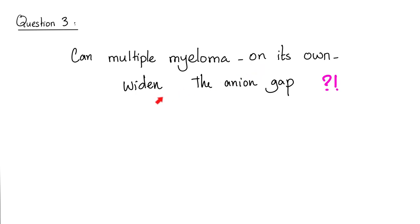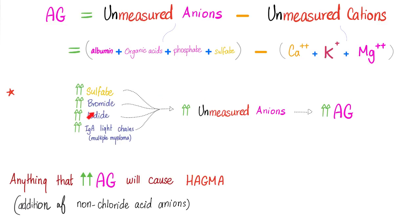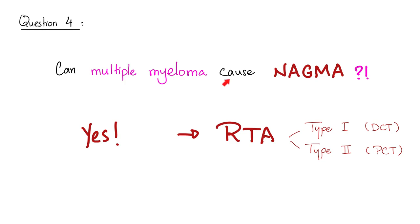Question three: can multiple myeloma on its own widen the anion gap? Yes, if it's an IgA light chain — these are considered unmeasured anions. When unmeasured anions increase, the anion gap widens. But for this to happen, the increase in IgA light chain must exceed the drop in albumin. Question four: can multiple myeloma cause normal anion gap metabolic acidosis? Absolutely, because multiple myeloma can cause renal tubular acidosis, especially type 1 or type 2.